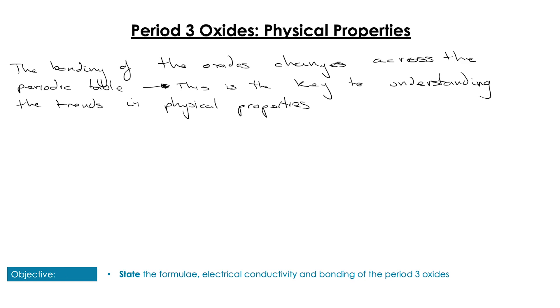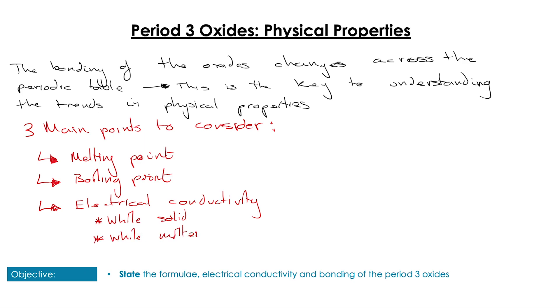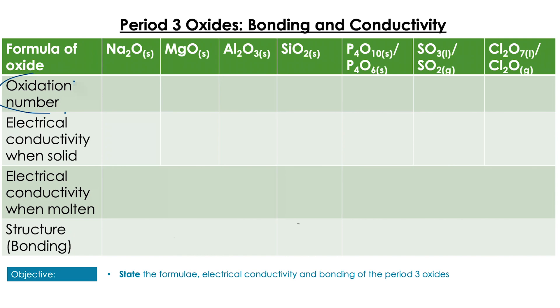There are three main physical properties we're going to look at in this video. They're not the only physical properties, but they're the ones you need to know for the IB, and they are melting point, boiling point, and electrical conductivity. Again, electrical conductivity we're going to look at both in the solid state and also in the molten state. I'm going to present this information in a table so we can better see the trends.